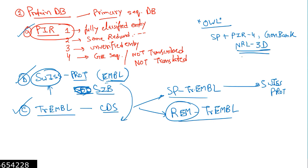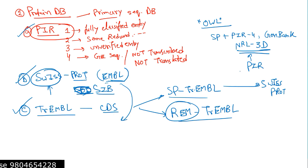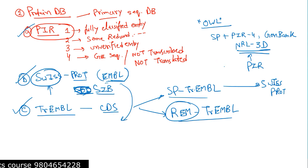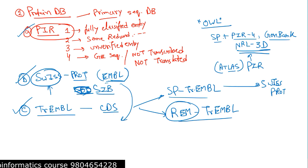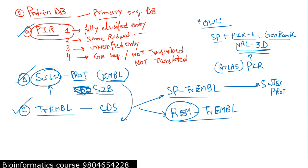NRL-3D is produced by PIR — Protein Information Resource. It is a database of PIR type and has a specific retrieval system known as ATLAS (A-T-L-A-S) — the ATLAS retrieval system. So NRL-3D, Swiss-Prot, PIR-4, and GenBank — all four together are combinedly known as OWL.